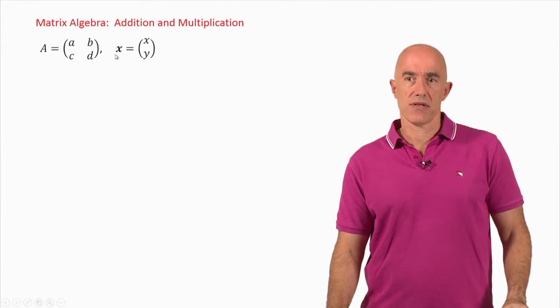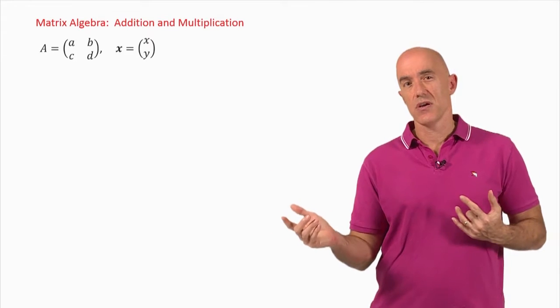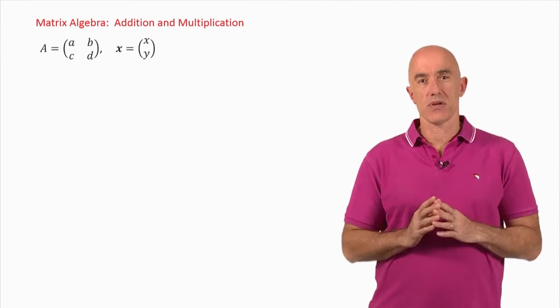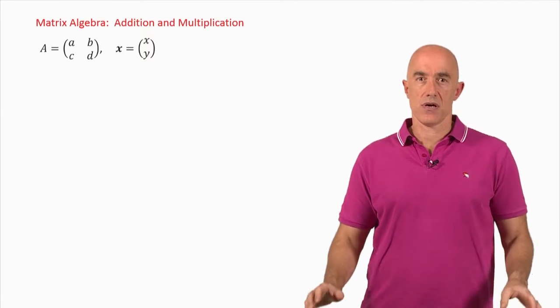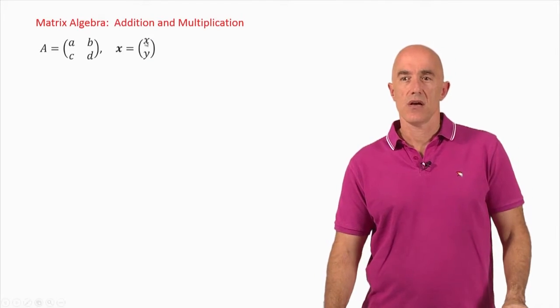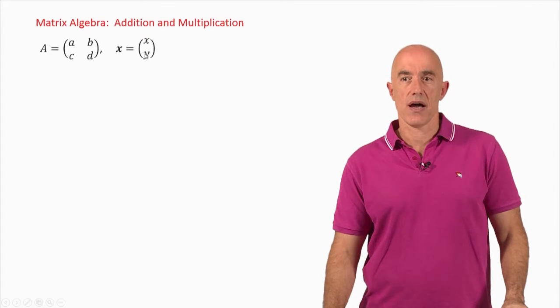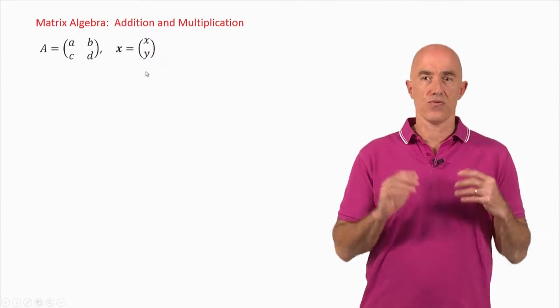X here, written in boldface, is what we call a vector, or we also call it a column matrix. For the two-component case, we write the column matrix as X, Y. So it has one column and two rows.